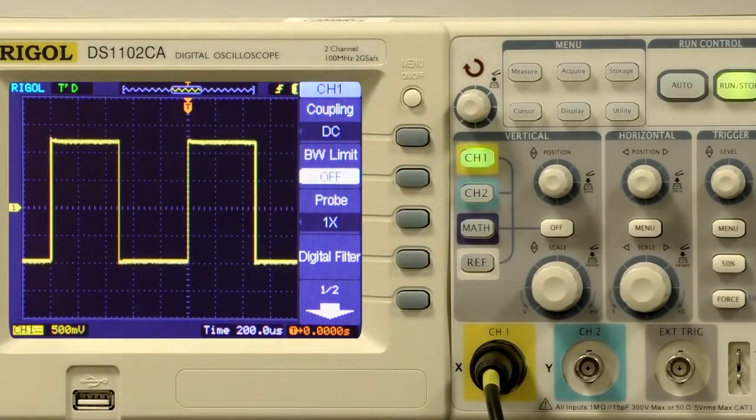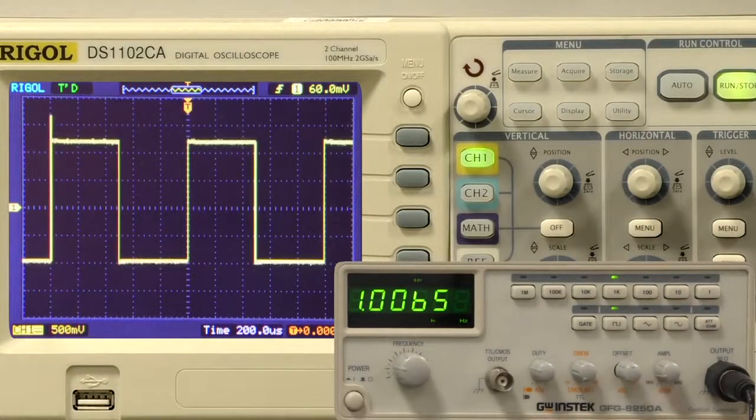First off, we've got it on DC coupling, signified here on the very bottom of the screen. DC allows you to see different offsets. I've got an offset pulled out on the signal generator. If I twist this up and introduce a voltage offset, the wave will move up or down and the ground will stay stationary.